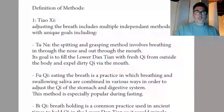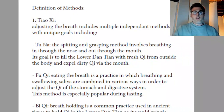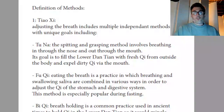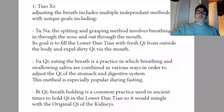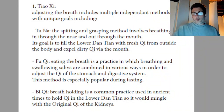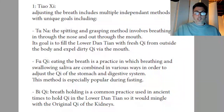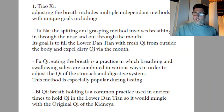In terms of defining methods, the first thing I want to look at is breath adjustment methods — adjusting the breath — which can include multiple different independent methods that have their own unique goals. The most popular one that everybody has heard of is Tuna, which means spitting and grasping. We draw fresh air in through our noses and we breathe out so-called turbid air from our mouths. This practice is popular both in Taoist texts and in Chinese medicine, and there were quite a number of texts dealing with Tuna methods. They can be very simple or very complex, and can involve some visualization.